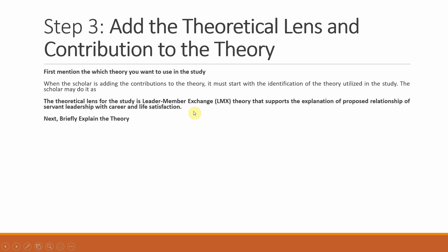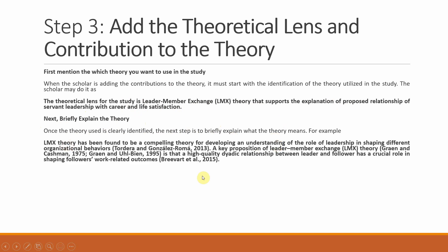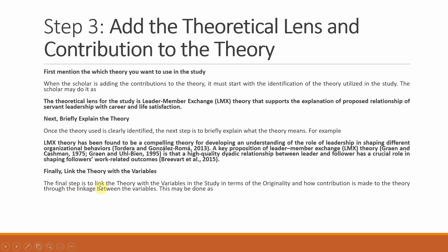Next, briefly explain the theory. Once the theory is clearly identified, the next step is to briefly explain what the theory means — this gives your reader a clear idea. After briefly defining the theory, the next step is to link the theory with your variables. The final step is to link the theory with the variables in the study in terms of originality and how contribution is made to the theory through the linkage between variables.